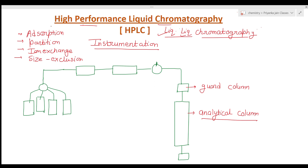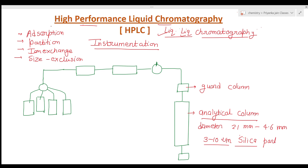The most important type of column used in HPLC is made of stainless steel and its diameter is between 2.1 mm to 4.6 mm. These columns are packed with porous silica particles of 3 to 10 micrometer diameter. These silica particles may be of spherical or irregular shape.